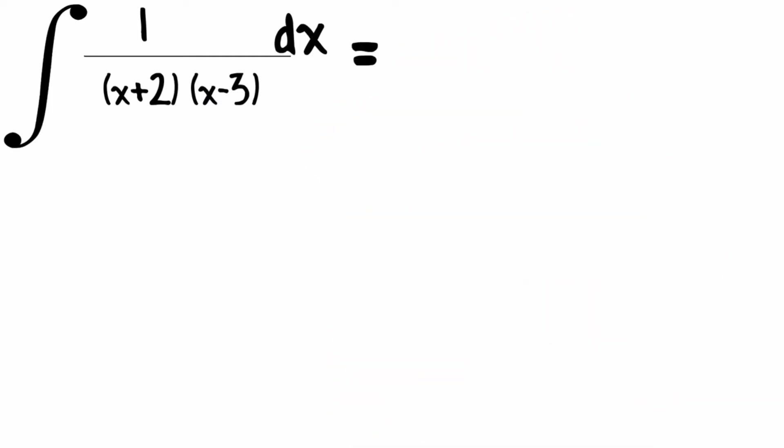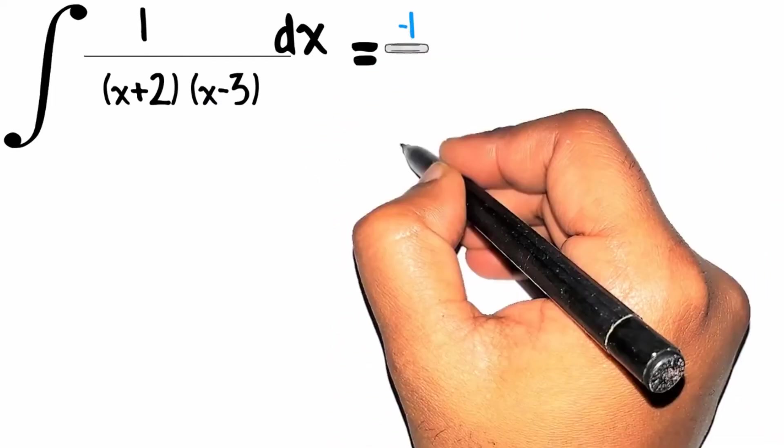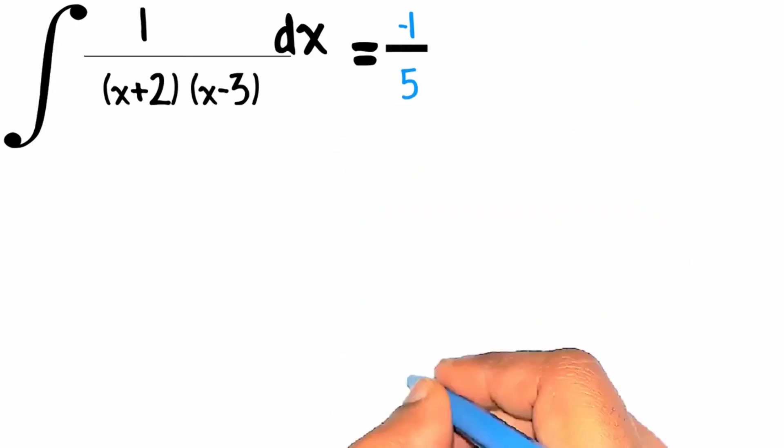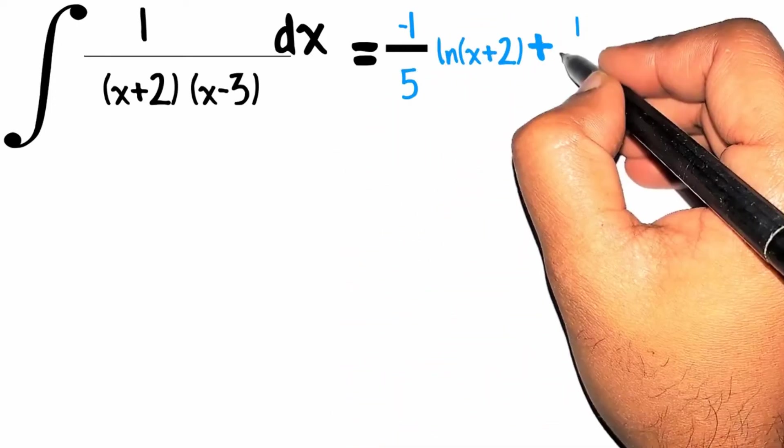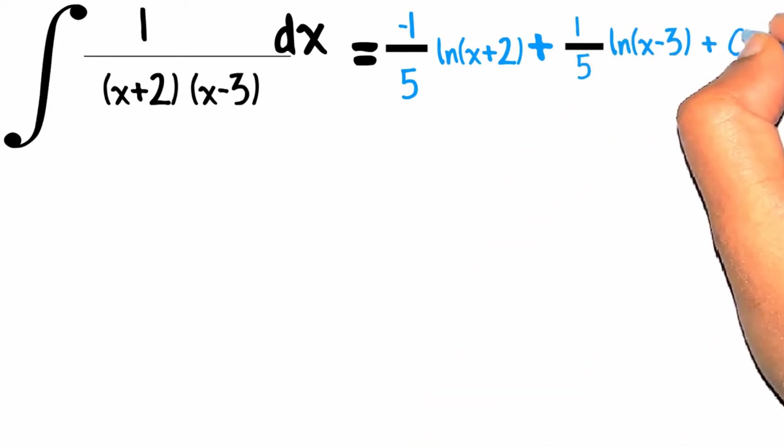So first I will take a simple example and solve it in my mind. So the answer will be minus 1 by 5 ln x plus 2 plus 1 by 5 ln x minus 3 plus c. Now I will explain you the trick.